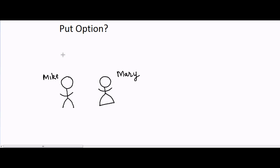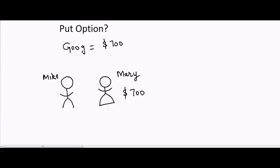Now let's talk about put options. Again using Mike and Mary — Google is at $700 and Mary already owns Google. She expects it to go higher but is worried it could drop to $680 or $650. She wants some kind of downside protection.